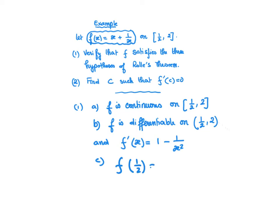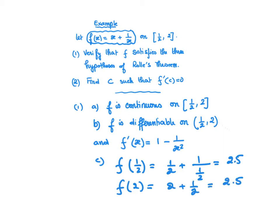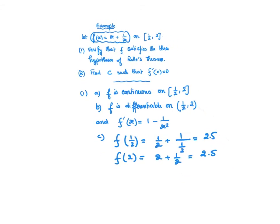We now check the third condition, which says the value of F at ½ should equal the value of F at 2. At ½, it's ½ plus 1 over ½, which gives 2.5. The value of F at 2 is 2 plus ½, which is also 2.5. So yes, our function F satisfies all three conditions — the three hypotheses of Rolle's theorem.